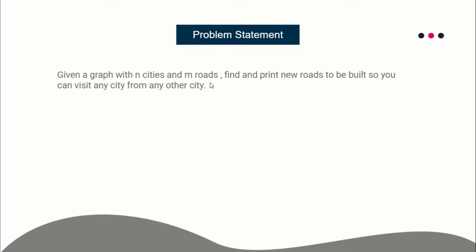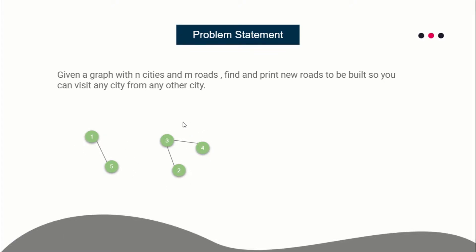You have to find how many new roads you need to add — basically the minimum number of new edges such that the whole graph is connected. For example, in the sample test case the graph is not connected. You can connect any node from one connected component to any node in another. For example, you can add edge (1, 3) and the whole graph will be connected. You have to print how many edges to add and also print those edges.